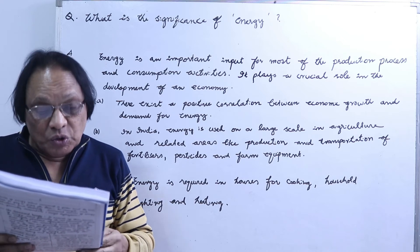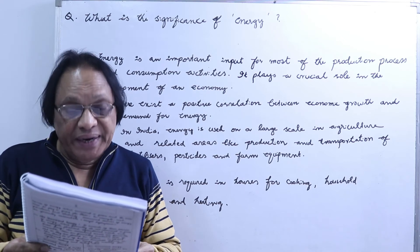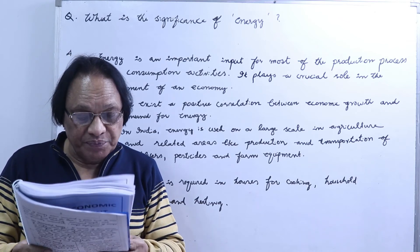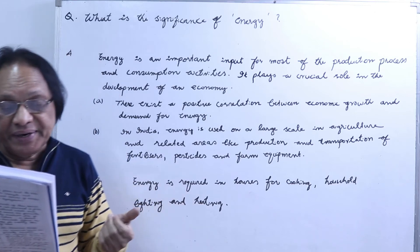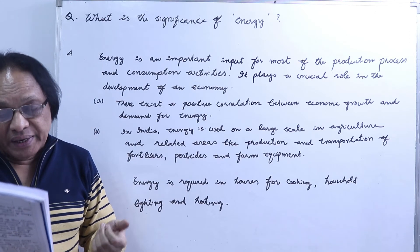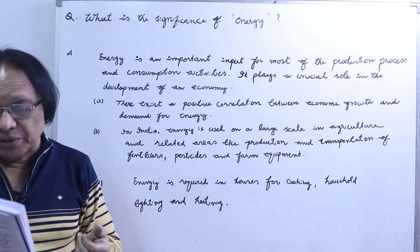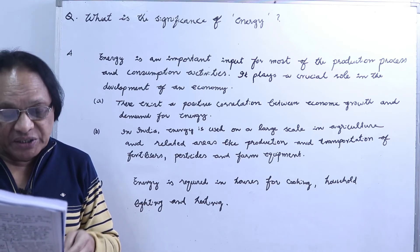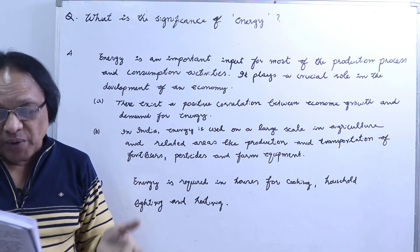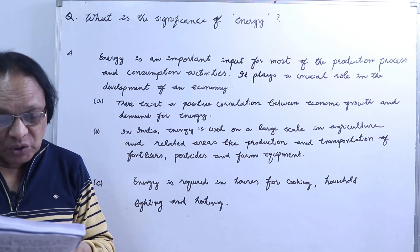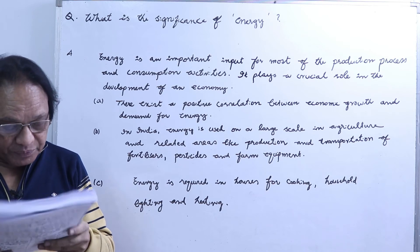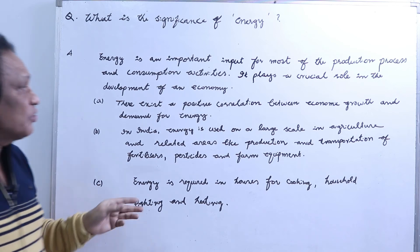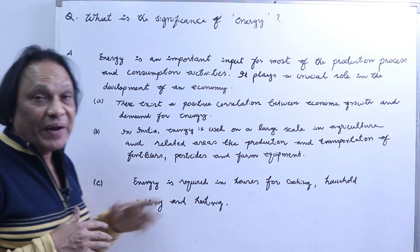Growth is an index of increasing productive activities, which requires a large quantity of energy. In India, energy is used on a large scale in agriculture and related areas like production and transportation of fertilizers, pesticides, and farm equipment. Energy is also required for houses — for cooking, household lighting, and heating. These are the three important points for the importance of energy.